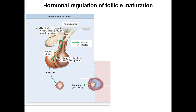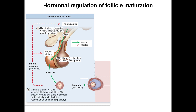The hormonal regulation of follicle maturation is complicated and not completely understood, but here is the current model. During the follicular phase, the hypothalamus secretes gonadotropin-releasing hormone, stimulating the anterior pituitary to release follicle stimulating hormone and luteinizing hormone. FSH stimulates antral follicles to grow and produce estrogen, while LH promotes the theca interna to produce androgens, which granulosa cells convert to estrogen via aromatase. As estrogen levels rise, this negative feedback inhibits FSH and LH. The follicles also secrete inhibin, which further inhibits FSH production, so only the dominant follicle survives the dip in FSH due to its increased FSH receptors.